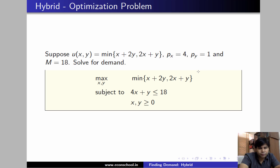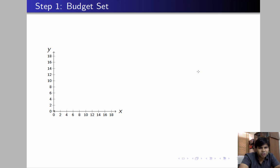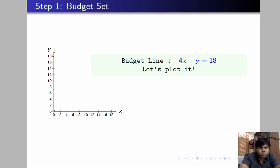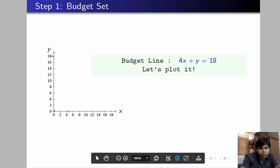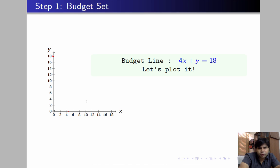We'll solve this problem in steps. The first step is to plot the constraint — the budget set. We want to plot the budget line: 4x+y = 18. If you spend all your money on y, you can afford 18 units of y. If you spend all your money on x, you can afford 4.5 units of x. Connecting these two points gives us the budget line.